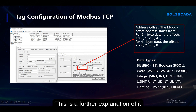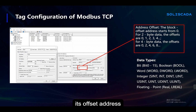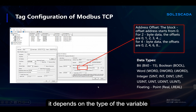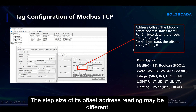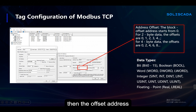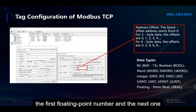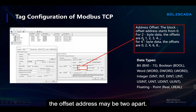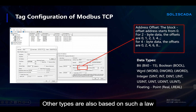This is a further explanation of the offset address. When we read two variables, the step size of the offset address reading may be different depending on the type of the variable. For example, for a floating point type, it may be a four-byte variable. Then the offset address of the first floating point number and the next one may differ by two. The first one is offset zero and the second is offset two. Other types follow the same rule when filling in the I/O address.